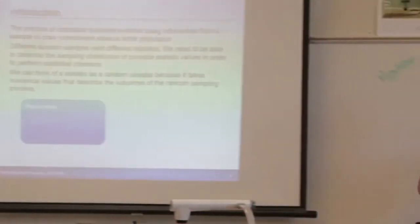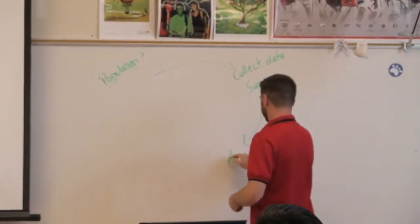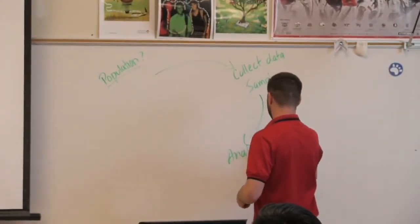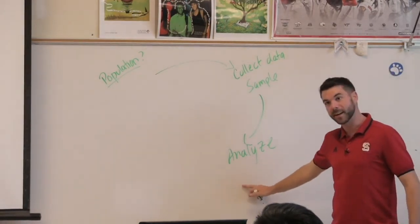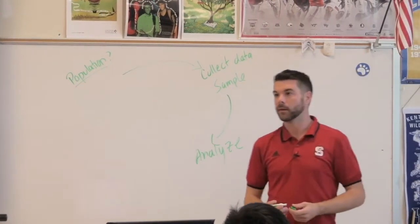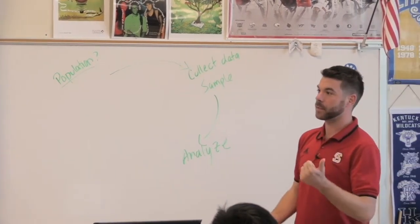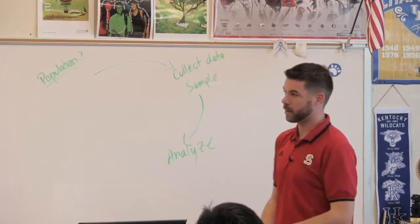So then we're going to look at this sample and analyze it. This was what we did in chapters one and two. How do you describe univariate data? One variable. SOCS: shape, outlier, center, and spread.